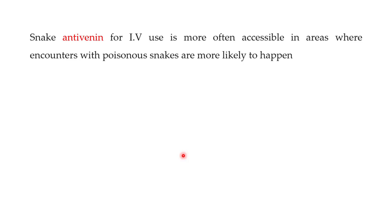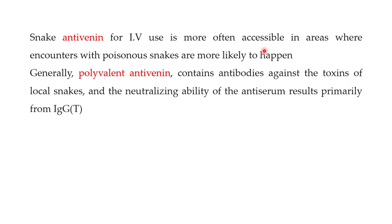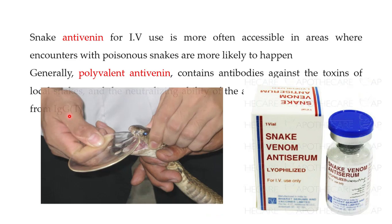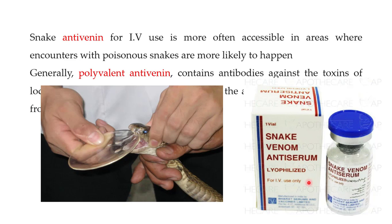To treat the victim of a snake bite, the anti-serum — which is known as anti-venom — is most often used. This anti-venom is more often accessible in areas where encounters with poisonous snakes are more likely to happen. Most of the time, polyvalent anti-venom is used, which contains antibodies against the venom of local snakes. The antibodies most commonly present in these anti-venoms are IgG antibodies. These are some of the commercially available anti-serums for snake venom, which can be administered intravenously.